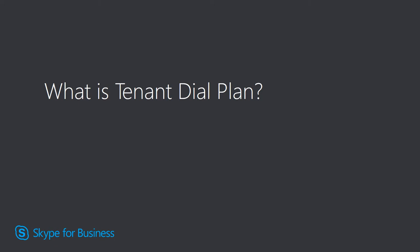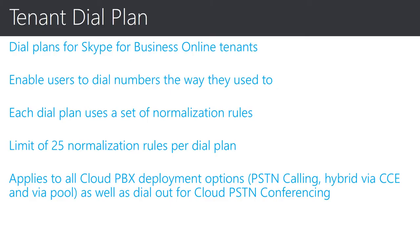Let's talk about Tenant Dial Plan briefly in the context of the SOF journey. Tenant Dial Plan provides organizations with customized dial plans in Skype for Business Online service. By implementing Tenant Dial Plan, users can retain existing dialing behavior such as not requiring a full E164 number to dial among users in the same office, or use country code and area code to dial external parties in the same city. Similar to how Dial Plan was implemented in Skype for Business on-premises, Tenant Dial Plan uses normalization rules, and up to 25 normalization rules are supported per Dial Plan. This means you must define normalization rules efficiently using regular expressions. Tenant Dial Plan will be useful for Cloud PBX implementations with PSTN calling or with on-premises PSTN connectivity via Cloud Connector, since previously these deployment types depended on the surface-level Dial Plan.